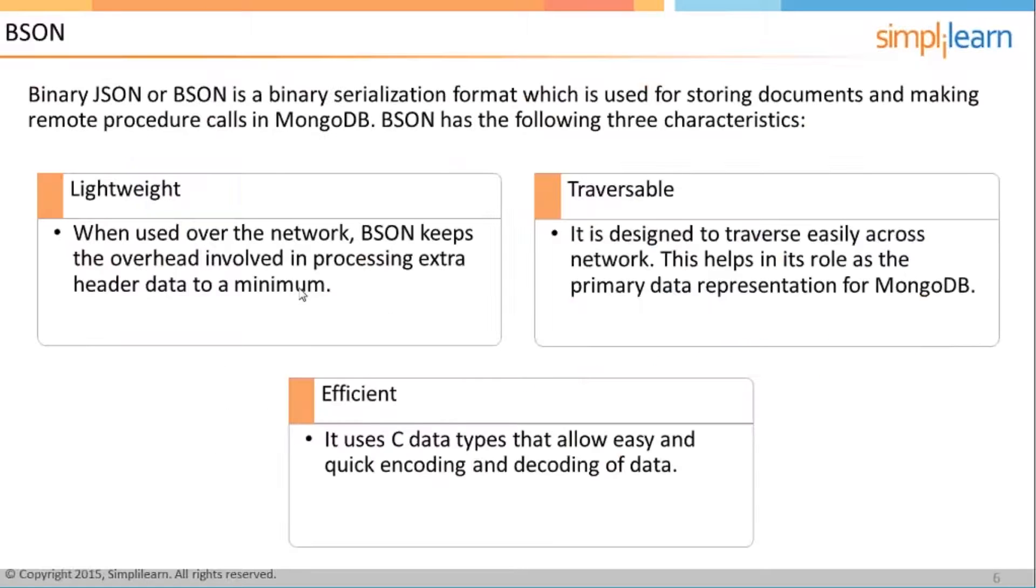So now what we study is BSON. Now what's BSON? Binary BSON is called binary JSON - that is binary JavaScript Object Notation. So binary JSON or BSON is a binary serialization format which is used for storing documents and making remote procedure calls in MongoDB. BSON has the following three characteristics.